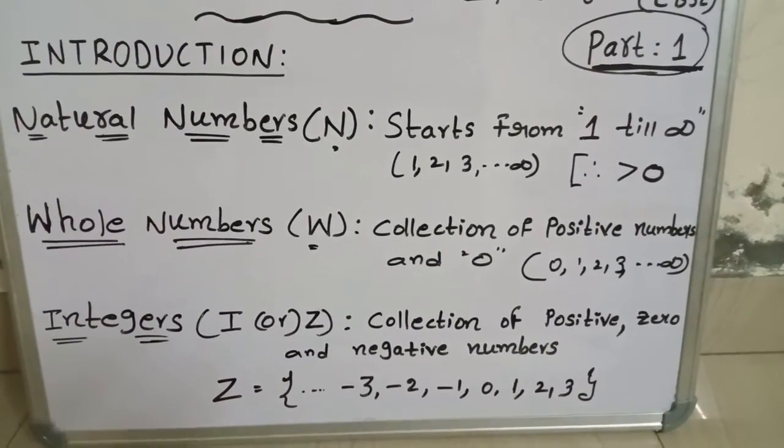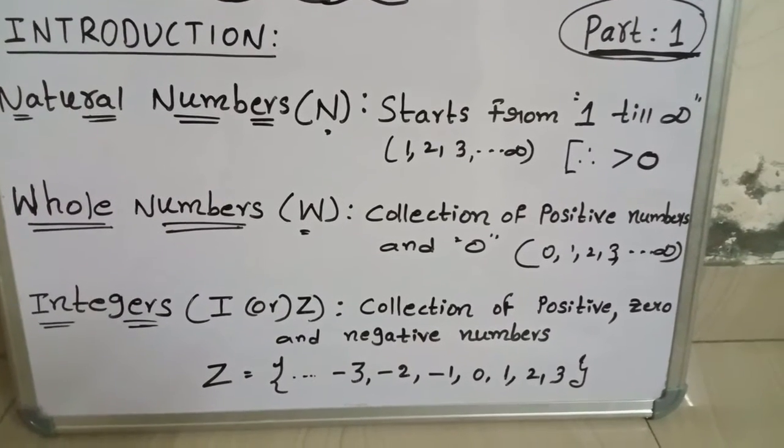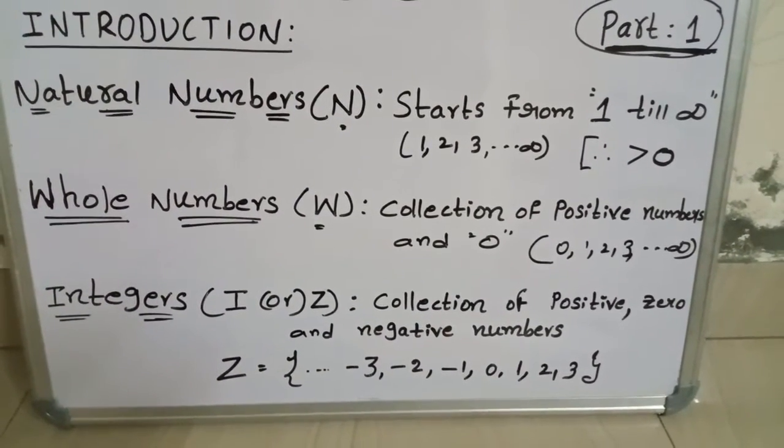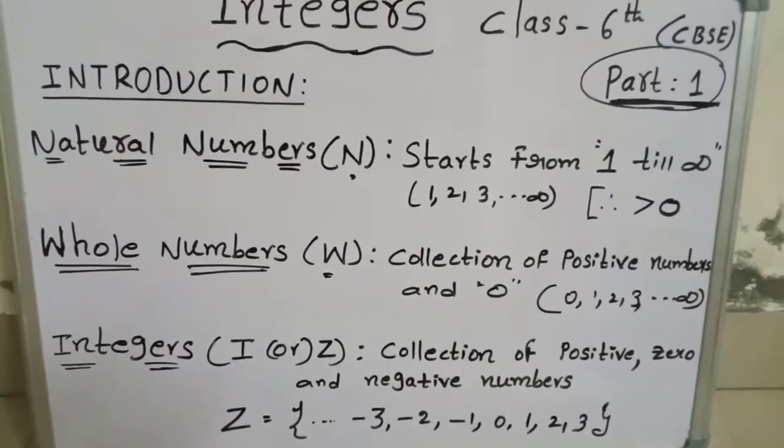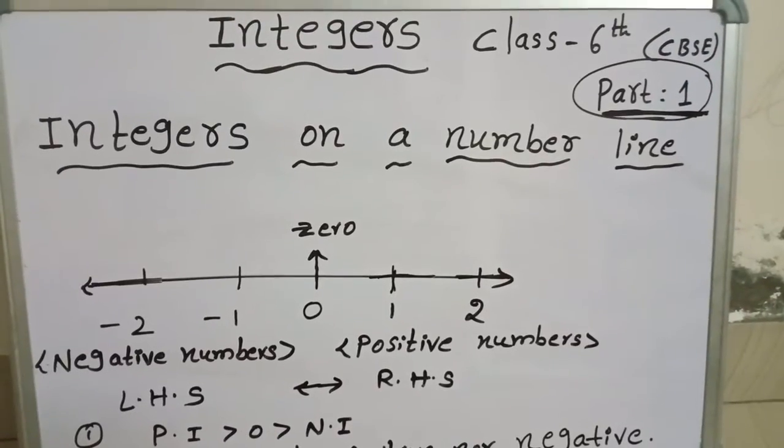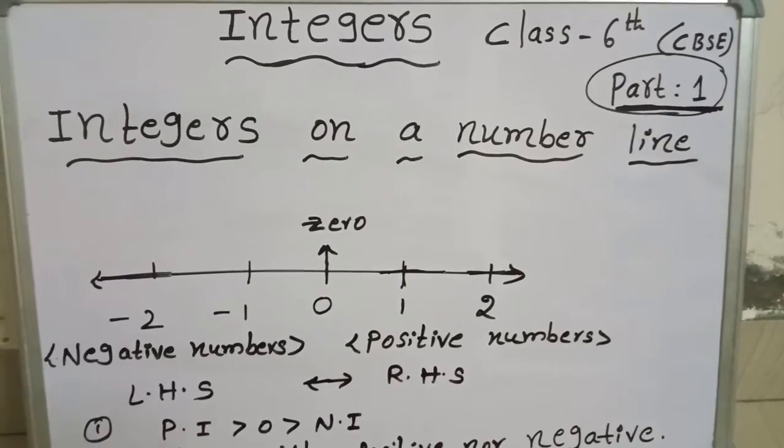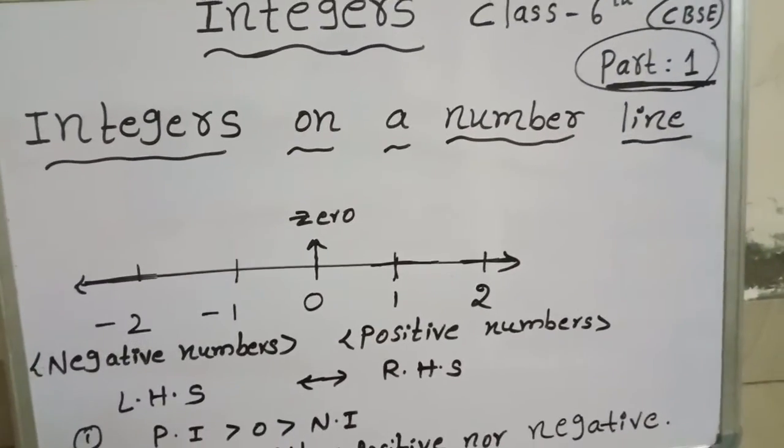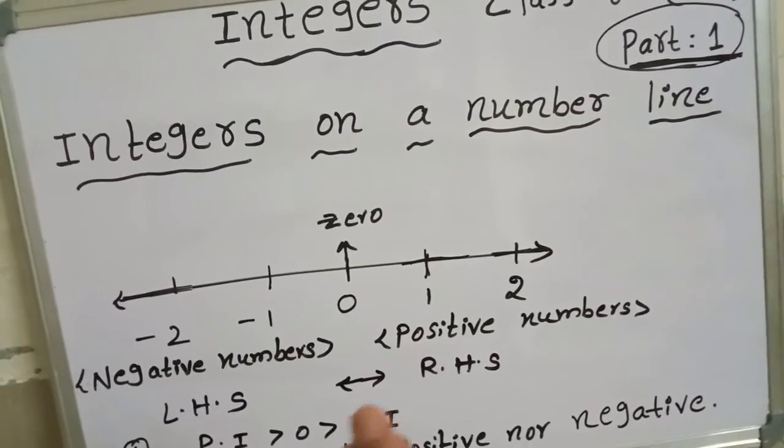by negative integers. And if profit are represented by positive integers, then losses by negative integers. How to represent integers on a number line? Here you can see zero is the middle of the line. The numbers which are on